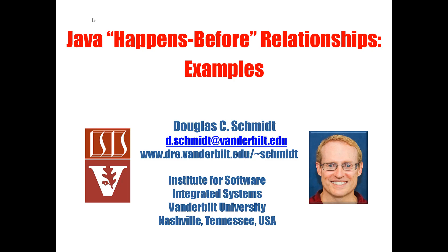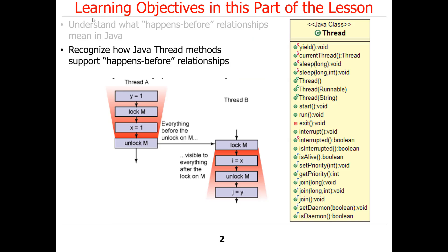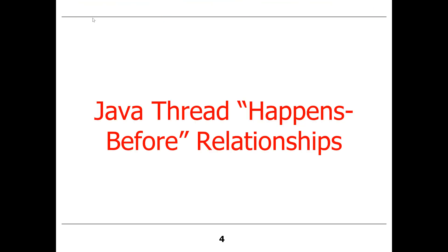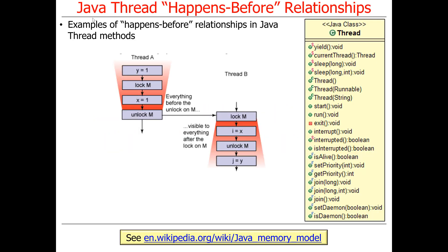Now that we've talked about Java happens-before relationships in general, I'd like to give you some concrete examples to make the ideas more specific. First we're going to talk about how Java thread methods support happens-before relationships, and then we'll talk about how Java collections support happens-before relationships. Let's start by talking about threads first.